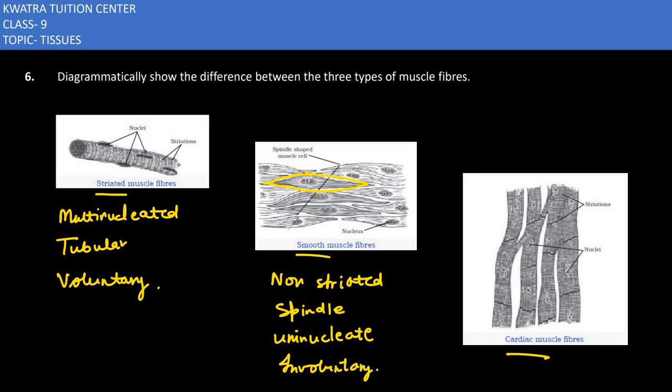Now we have to say cardiac muscle. Cardiac muscle is present in the heart and what is it? It is striated like the first one.